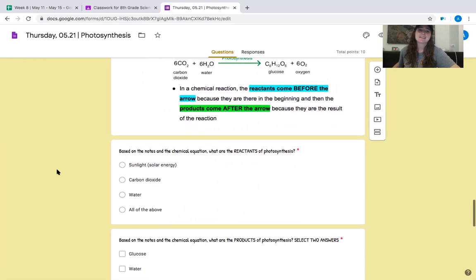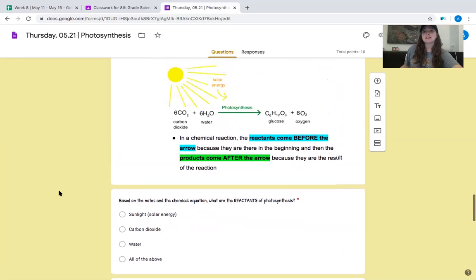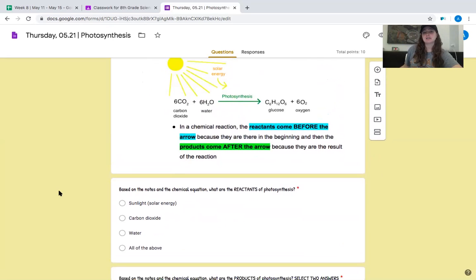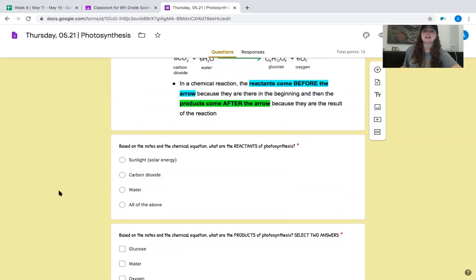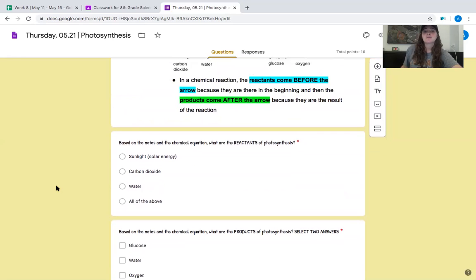Based on the notes in the chemical equation, what are the reactants of photosynthesis? So look up at the equation and figure out your answer. So is it sunlight, carbon dioxide, water, or all of the above? You should have said all of the above. All three of those things, sunlight, carbon dioxide, and water are reactants. Moving on.